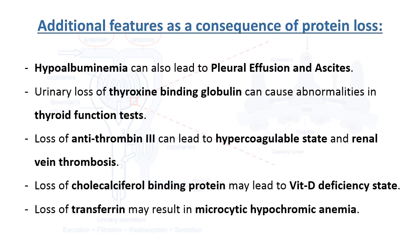Urinary loss of thyroxine-binding globulin can cause abnormalities in thyroid function tests. Loss of antithrombin III can lead to a hypercoagulable state and renal vein thrombosis. Loss of calciferol-binding protein may lead to a vitamin D deficiency state. And lastly, loss of transferrin may lead to microcytic hypochromic anemia.